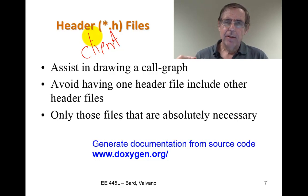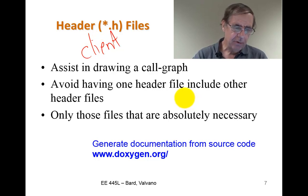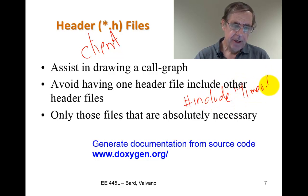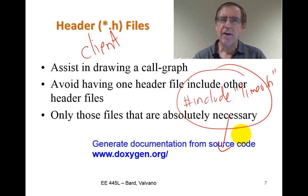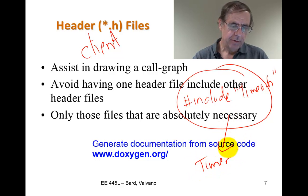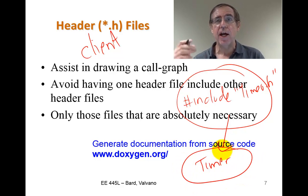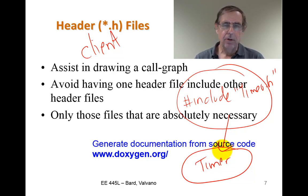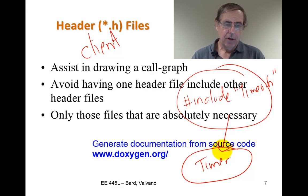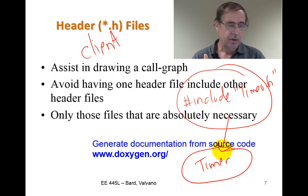When I include a file — for example, include timer.h — if I'm in this file right here, that is a call graph link down to the timer module. The include files are actually linkages in the call graph. To make it simple, we want fewer arrows, and to make it simple, we want fewer includes. We want to separate our system so that there are fewer linkages in the call graph, so we only include files that are absolutely necessary.